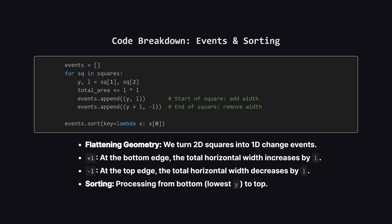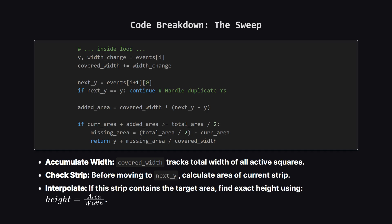We flatten our 2D geometry into a 1D list of changes. For every square, we have two events: at the bottom Y, the total width of our cross-section increases by the length L. At the top, which is Y plus L, the square ends, so the total width decreases by L. We add these to a list and sort them by coordinate. Then comes the sweep — we maintain a variable called covered_width. At each step, we look ahead to the next event's Y coordinate. The area between our current position and that next event is simply the current width times the height difference. If adding this strip pushes us over half the total area, we stop, and calculate the exact position by taking the area we still need and dividing it by the current width.